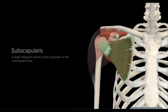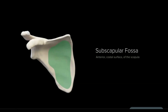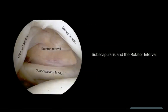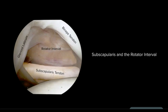As a brief overview, the subscapularis is defined as a large triangular muscle which originates on the subscapular fossa of the scapula and inserts on the lesser tuberosity of the humerus. The subscapularis is the most anterior rotator cuff muscle. Here you can see an intra-articular image of a right shoulder viewed through a standard posterior portal, where the rolled tendon of the subscapularis can be identified going right to left across the image.